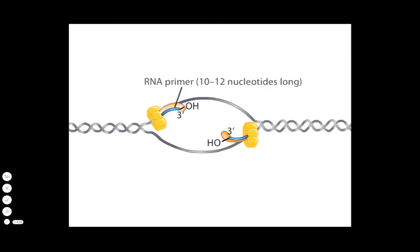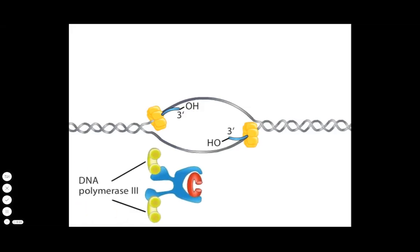The main replication polymerase in E. coli is called DNA polymerase III. DNA polymerase III complexes are ferried to the replication forks by protein complexes called clamp loaders. Clamp loaders also carry other protein complexes called sliding clamps.